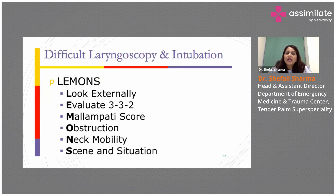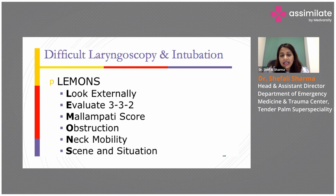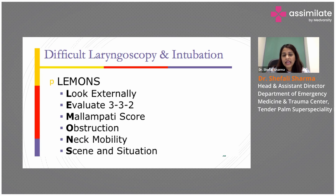For difficult laryngoscopy and intubation, you use the LEMON mnemonic. Look externally — is there any scar mark on the face, any external swelling? Then evaluate the 3-3-2 rule: can you insert three fingers inside the mouth to assess jaw and mouth opening? Check the cricothyroid distance with three fingers and two fingers. Mallampati scoring is assessed internally — I have a photograph in the next slide. O is for obstruction, any external or internal airway obstruction.